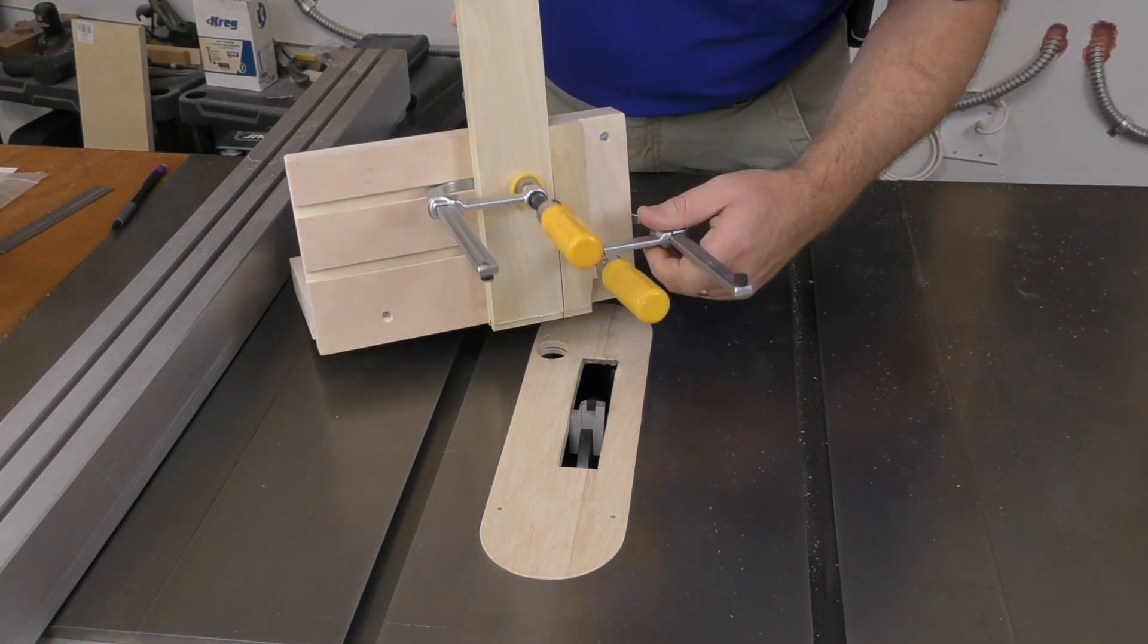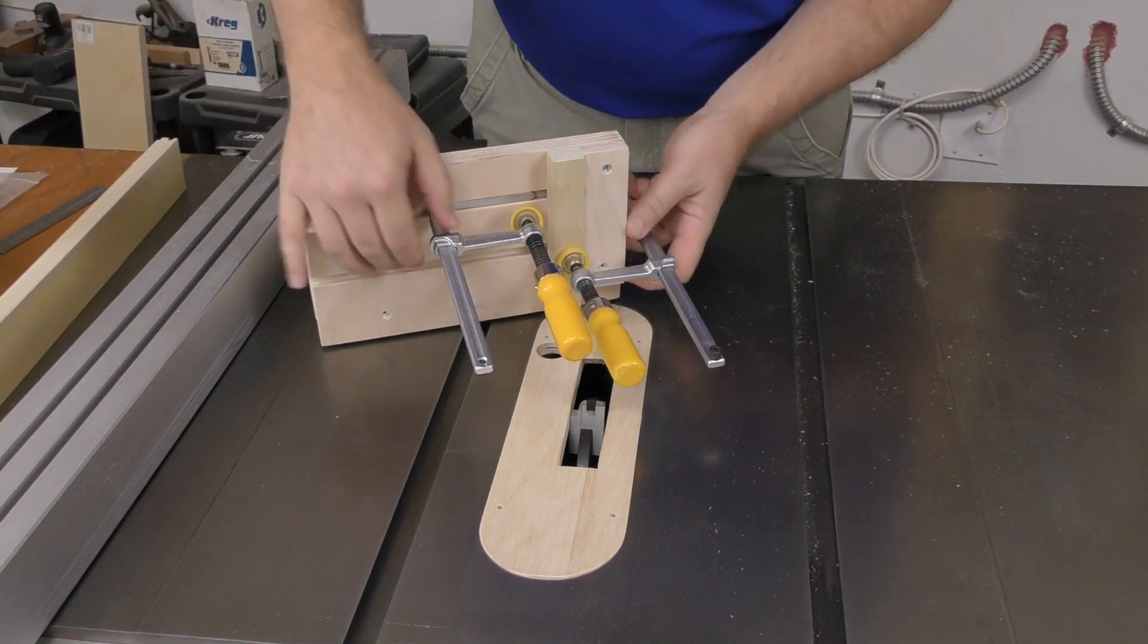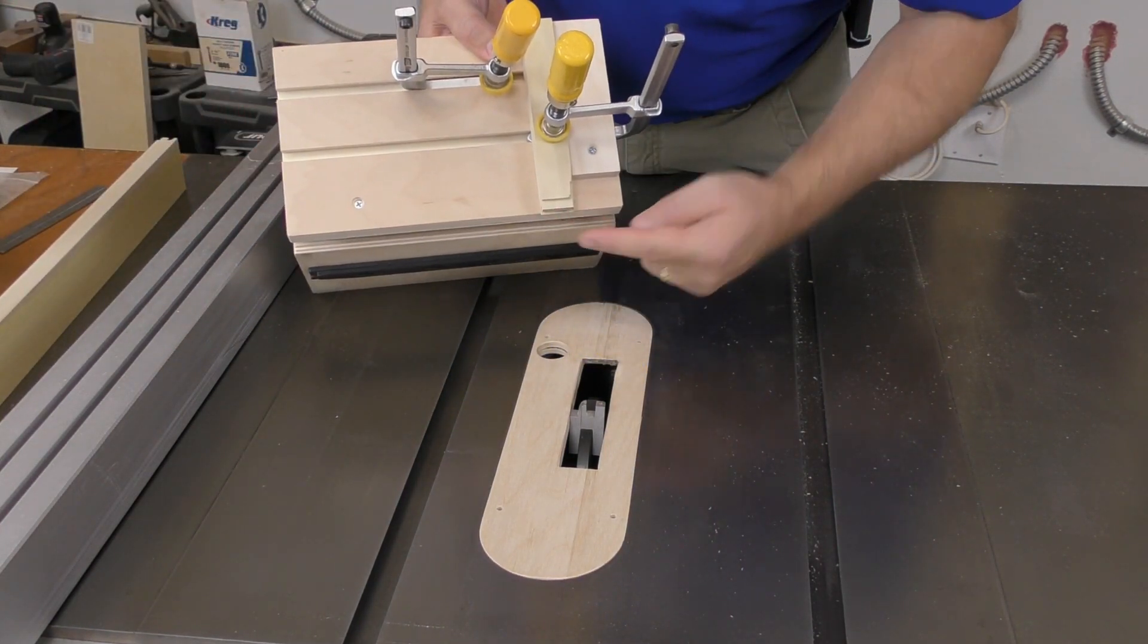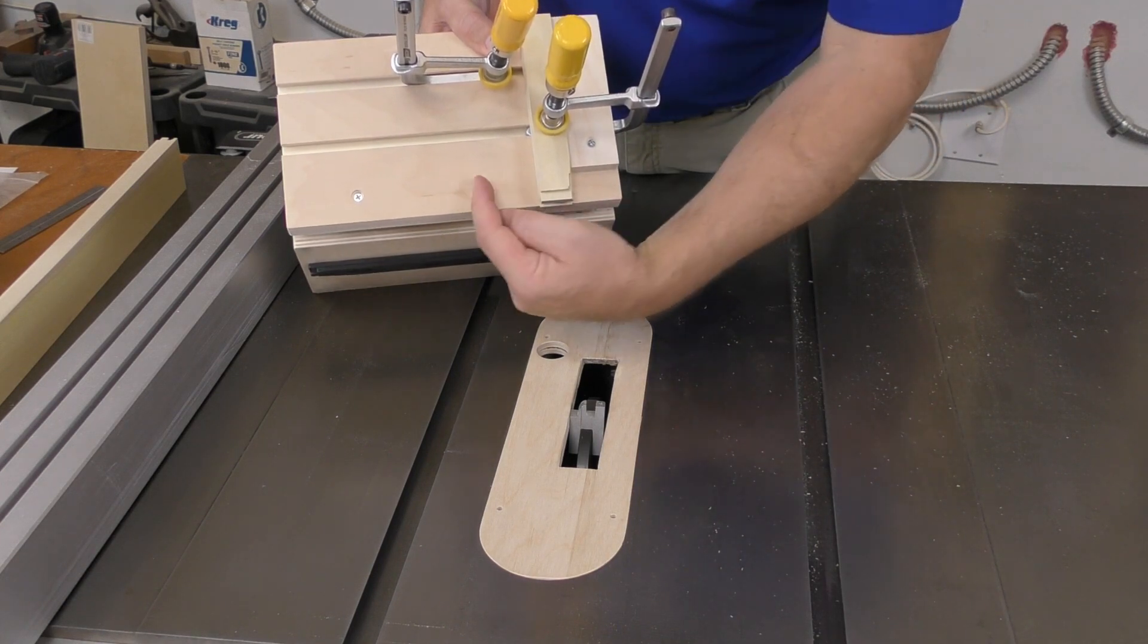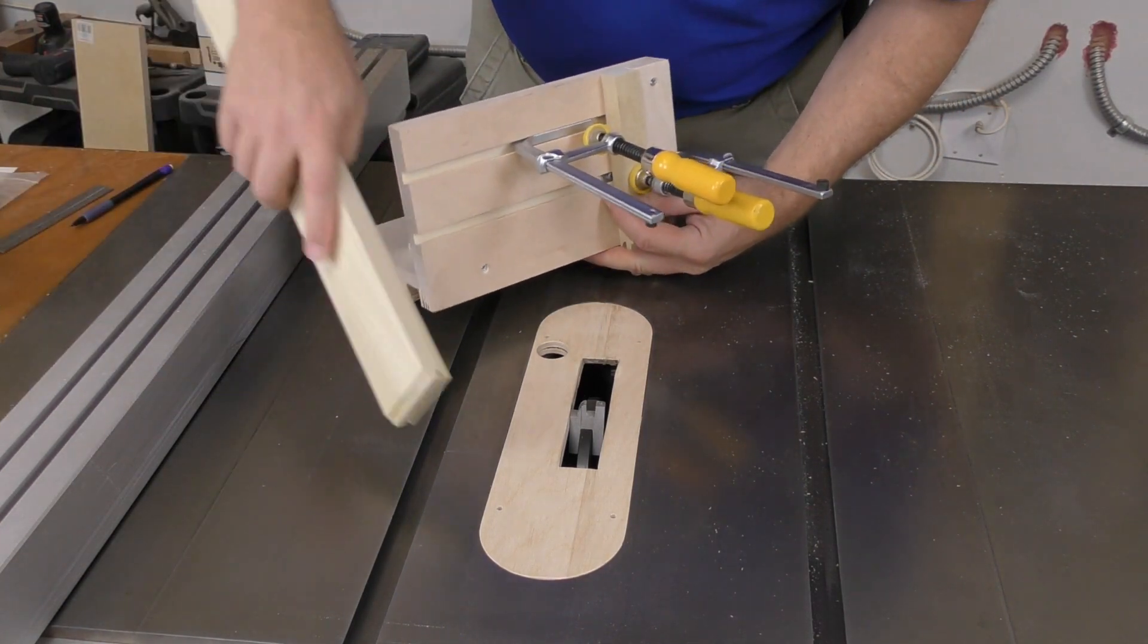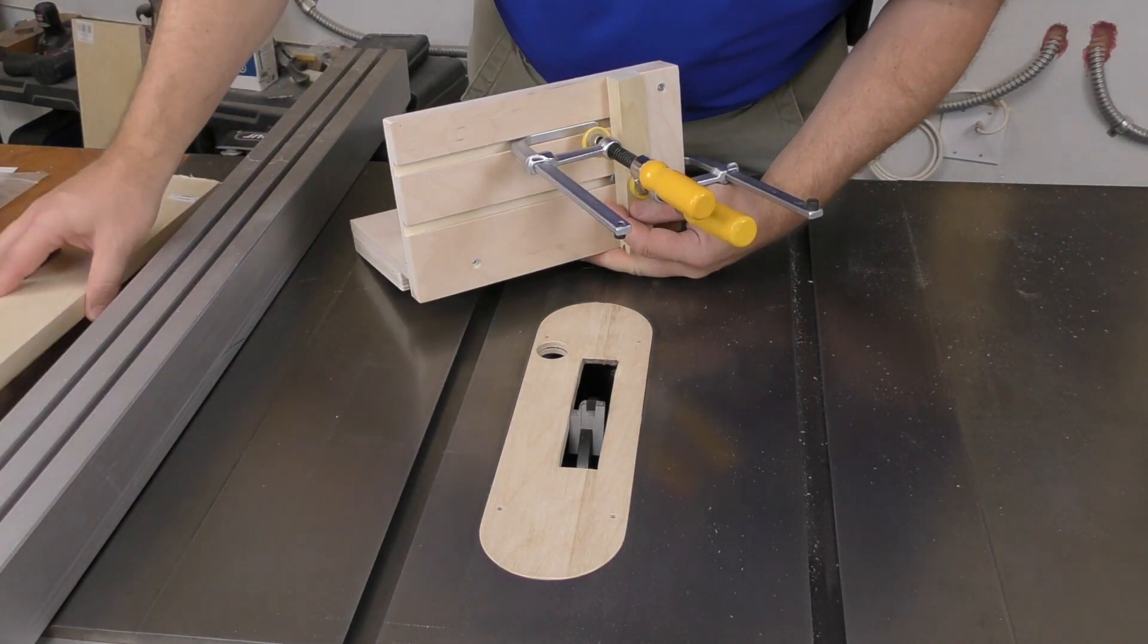You'll also notice that I'm using two clamps. One that's holding the part that I'm milling, but a second one to hold a piece of scrap that backs up the part that I'm cutting so that I get clean edges as I mill the ends of these parts.